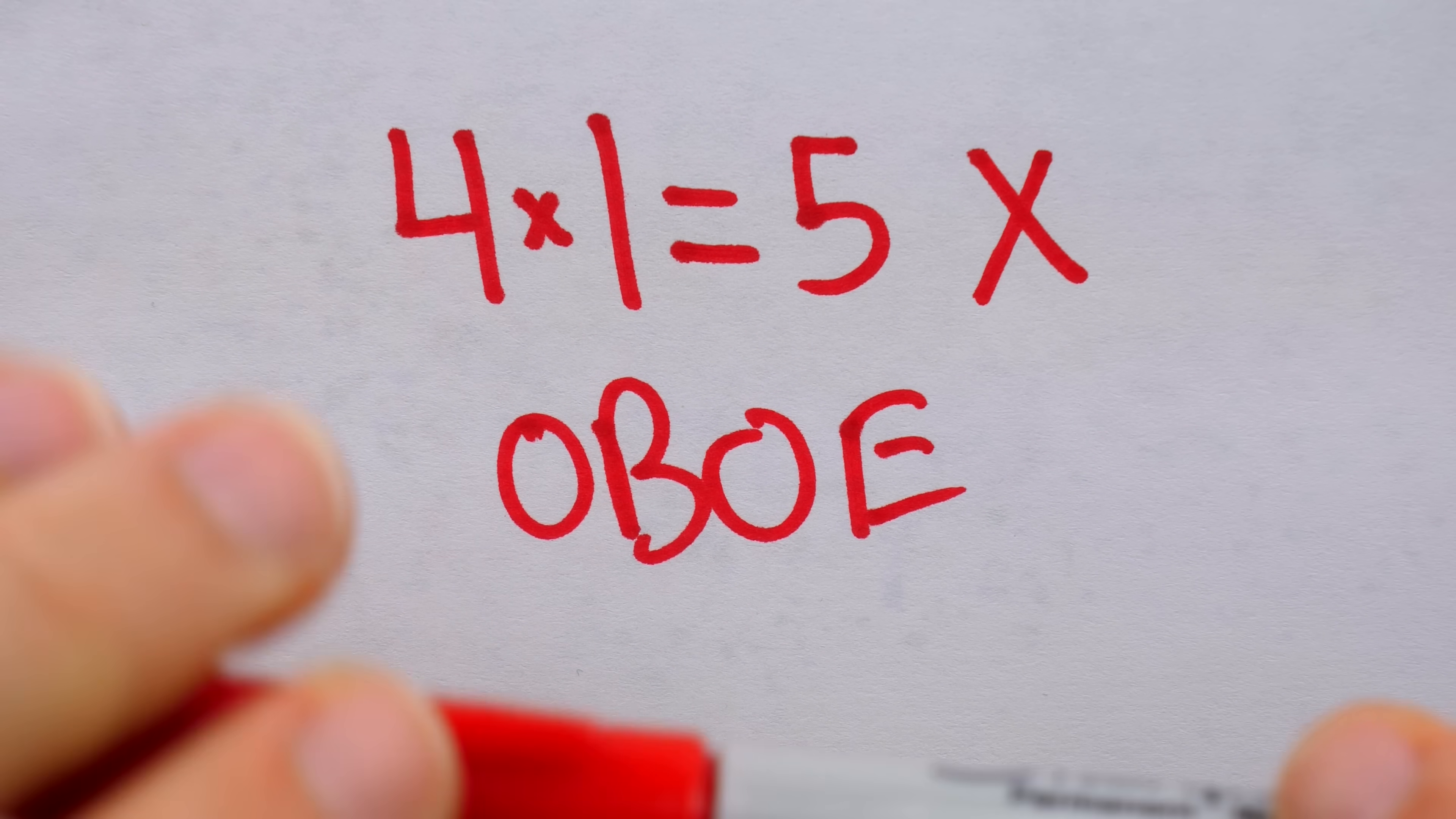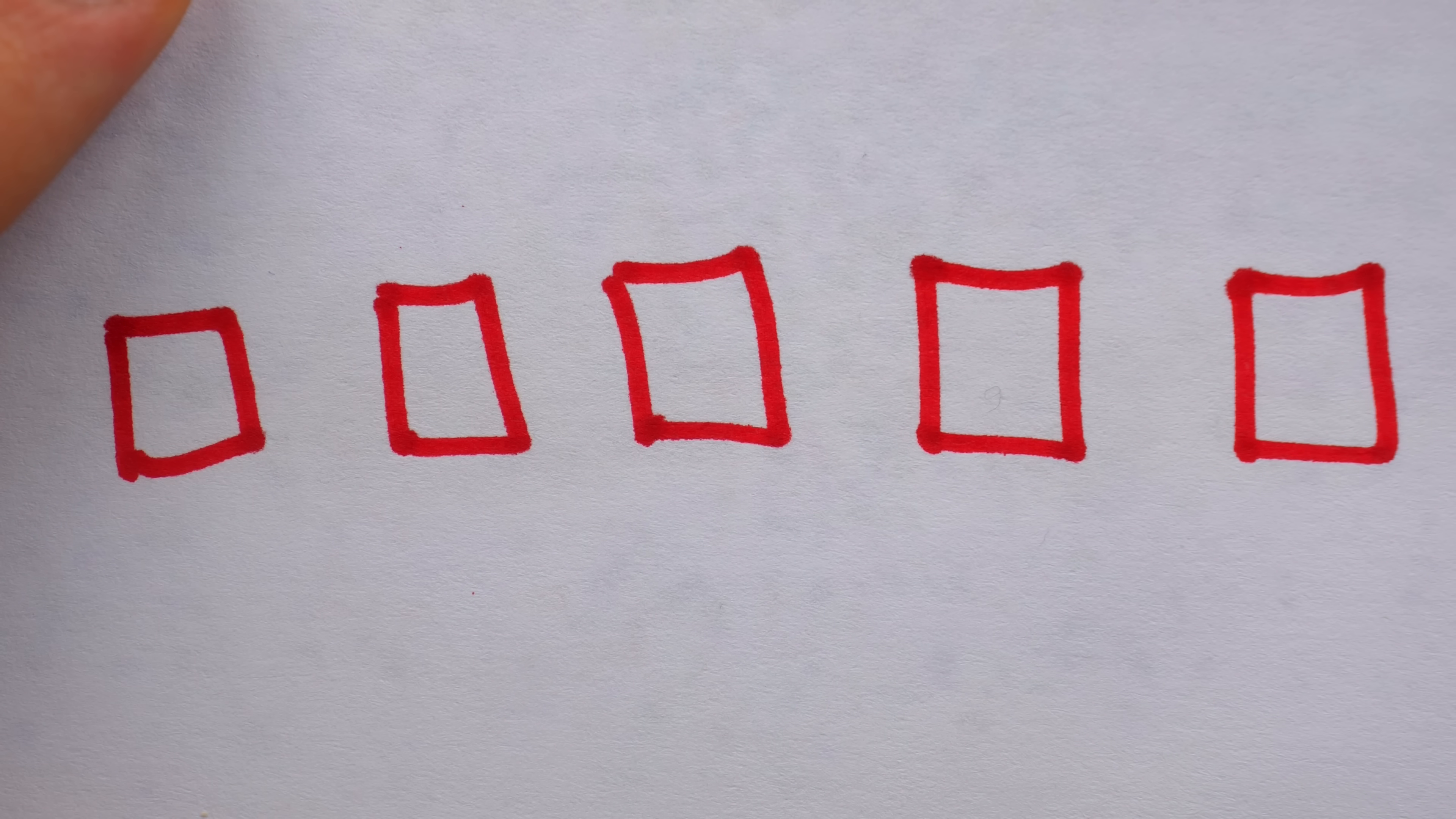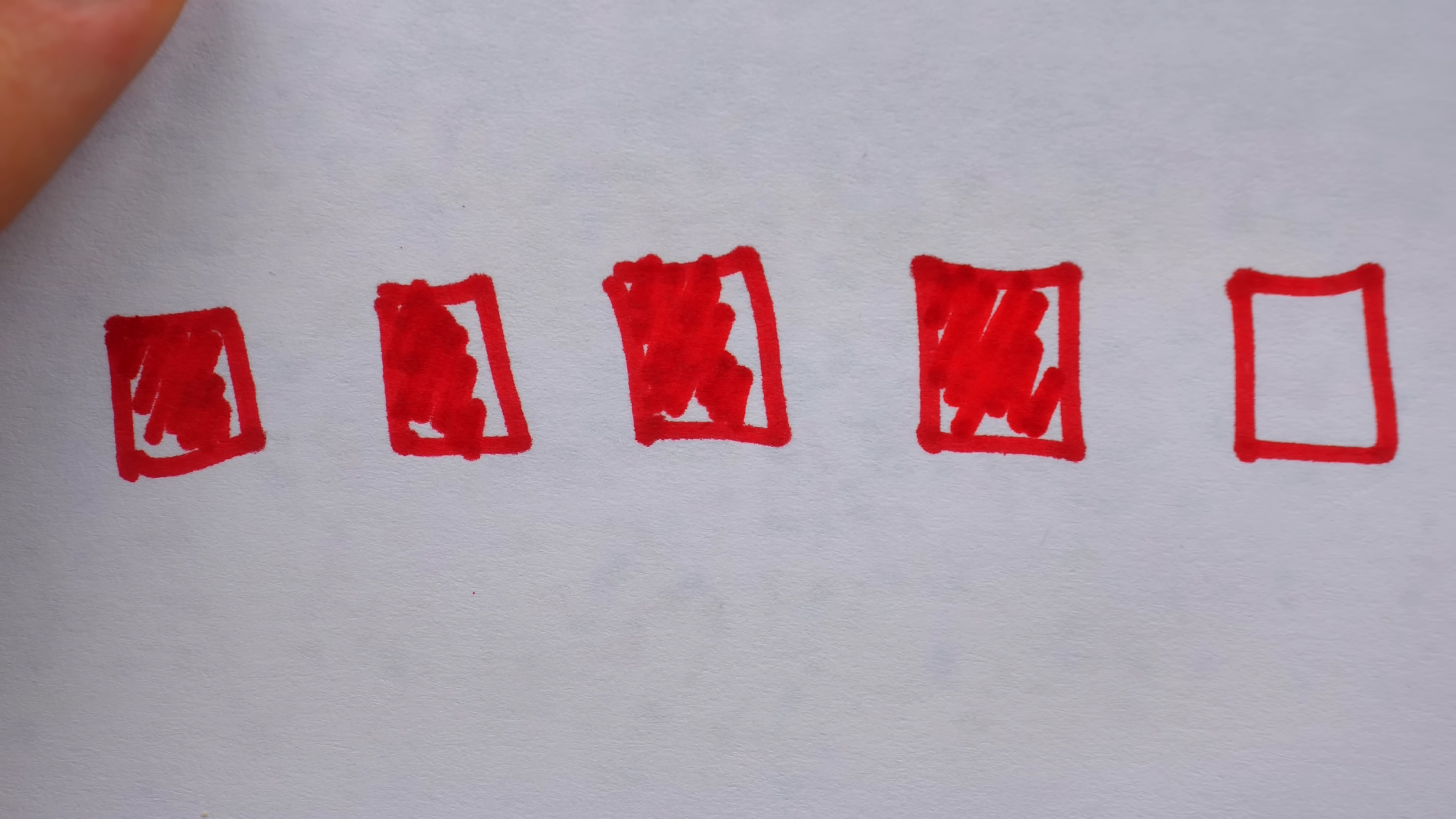but it's not really an off by one error. An off by one error generally takes a form similar to accidentally including the start, like Hassan might have done in his addition, accidentally including the initial position as one counter. Or, instead of accidentally including the start, an off by one error can take the form of accidentally not including the end. Or, of course, it can be done vice versa.